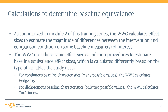For continuous measures — variables that have many possible values such as standardized test scores — the WWC calculates Hedges G. For dichotomous measures — variables with only two possible categories such as graduated or not — the WWC calculates Cox's index. Both of these measures express the effect size in standard deviation units based on the variation of the baseline measure in the analytic sample. The WWC's online study review guide has tools to assist with these calculations as well.